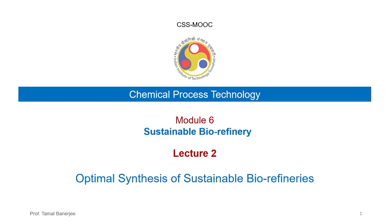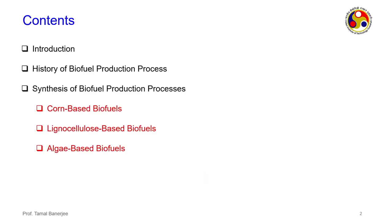We have also seen what the plant looks like and given an example of a commercial plant where different processes are carried out at pertinent areas. Today's lecture will cover what processes are involved, how we get the desired product — in this case biofuel, which primarily refers to ethanol and sometimes butanol. Today's lecture will give a description on the optimal synthesis of sustainable biorefineries, introducing the concept of biofuels.